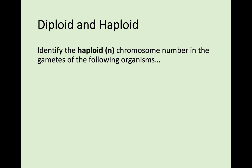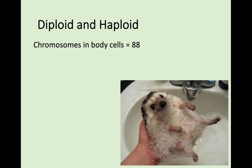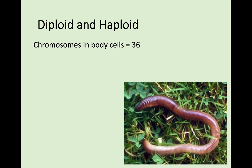Here are some examples to identify the haploid chromosome number in the gametes of various organisms. A giraffe skin cell has 62 chromosomes, so their gametes would have 31 — half the number, because gametes are haploid. A hedgehog has 88 chromosomes in its body cells, so 44 in its sex cells. For a worm, 36 chromosomes in body cells means 18 chromosomes in their sex cells.